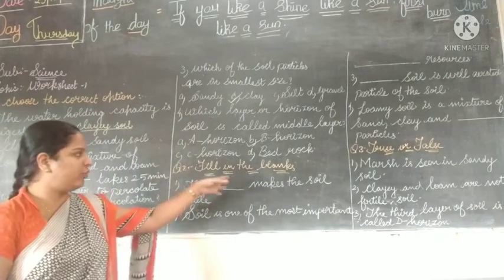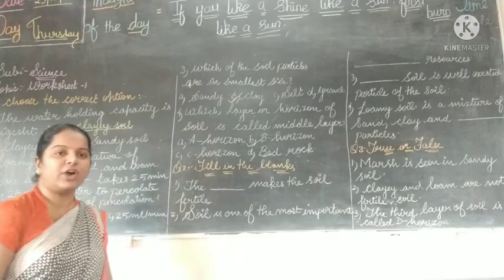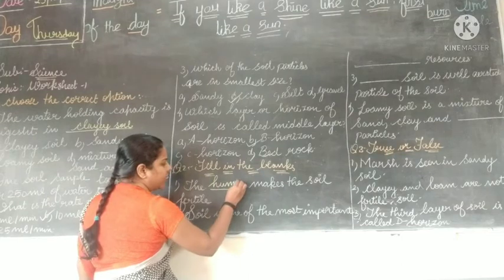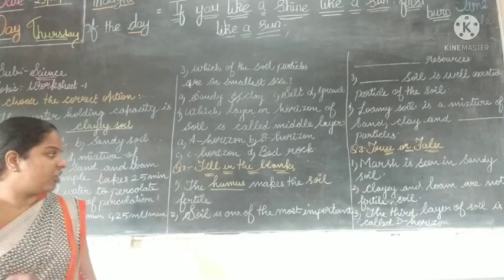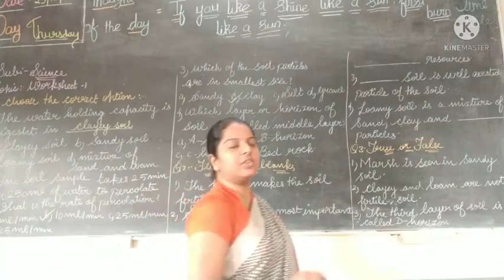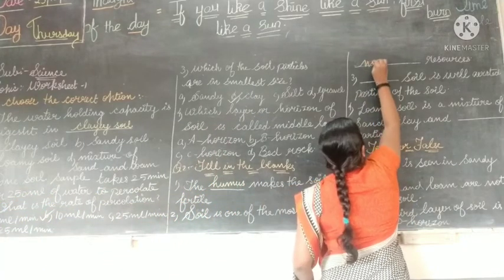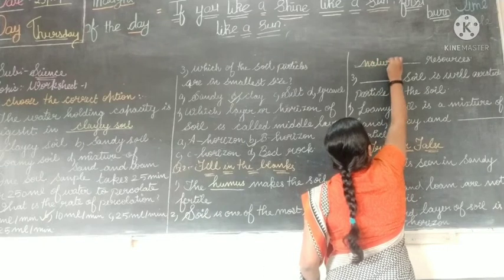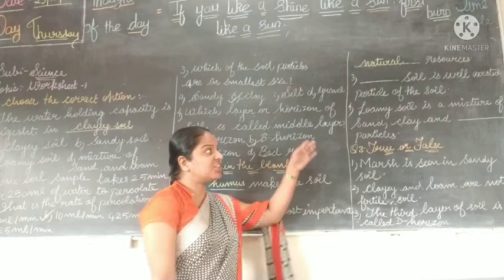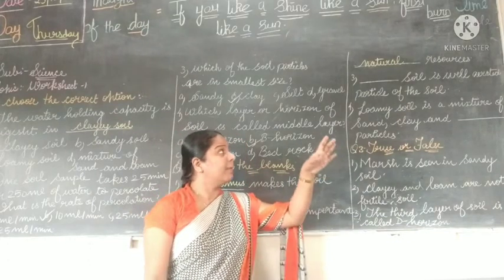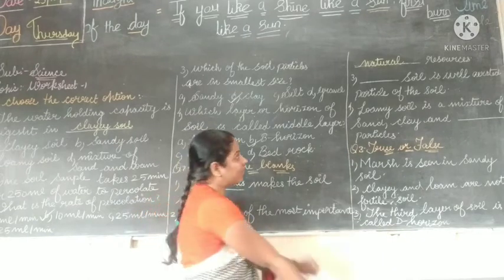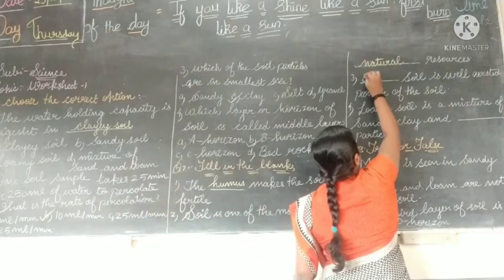Moving on to fill in the blanks. The blank makes the soil fertile — the answer is humus. Humus makes the soil fertile. Soil is one of the important blank resource — the answer is natural resource. Blank soil is well aerated — the answer is sandy soil.